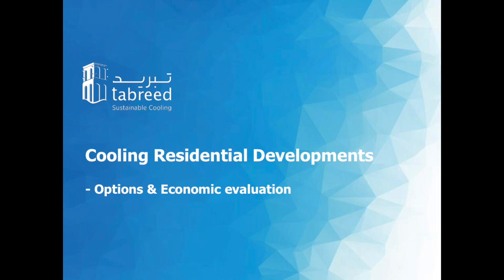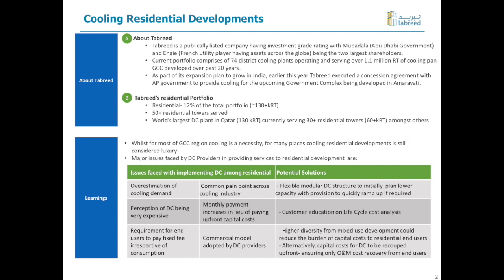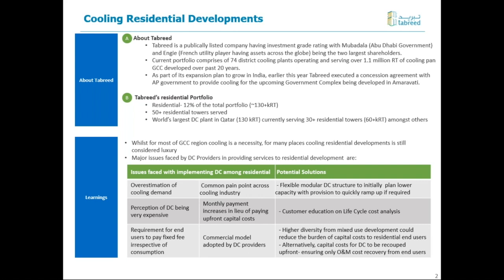In my presentation, I would like to highlight few areas where the decision-making process is involved. Although we understand that district cooling is the most efficient form of cooling at present, the decision is not only made on energy efficiency — most of the time it's made on economic viability of the whole system. Just to give a brief overview of Tabreet: we are a publicly listed company on DFM with Mubadala and NG being our largest shareholders. Tabreet currently has 74 district cooling plants, operating and serving around 1.1 million refrigerated tons of cooling across GCC and has been operating for the last 20 years.